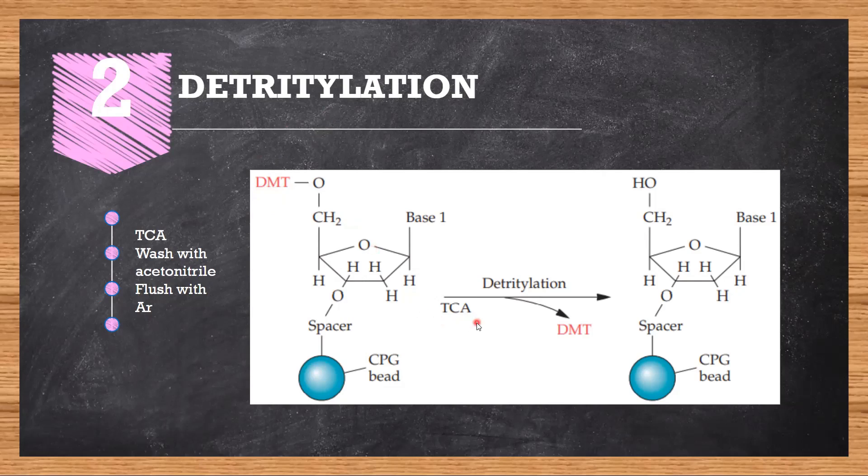How can we do it? By using TCA, trichloroacetate. After TCA, the DMT group is replaced by H+ and now you have a ready nucleotide.